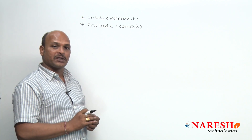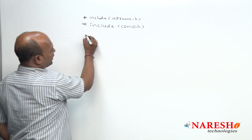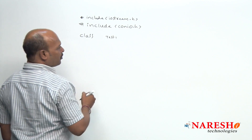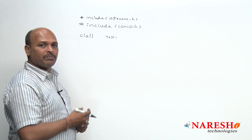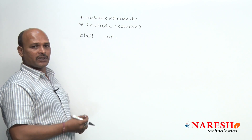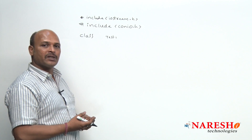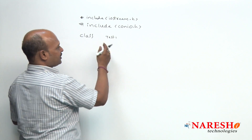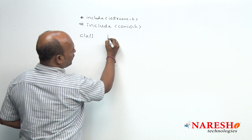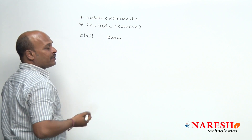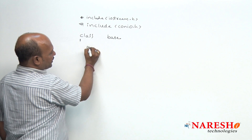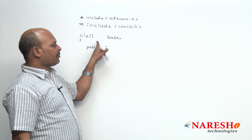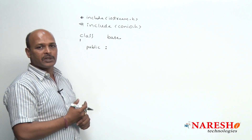Now I am going to start a class. For example, class test1 — now it is the first class, otherwise we directly take the base class. Since our concept is inheritance, we are using one base class and one derived class. So I am going to change test1 to base class. And here there is a public keyword.